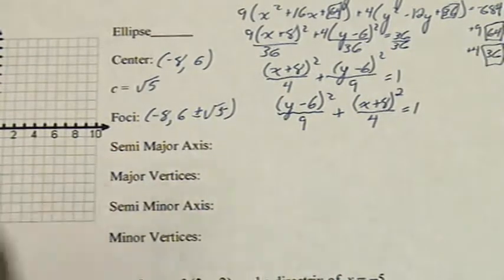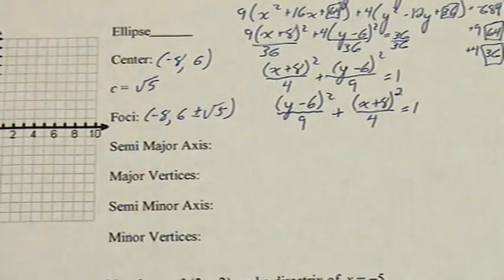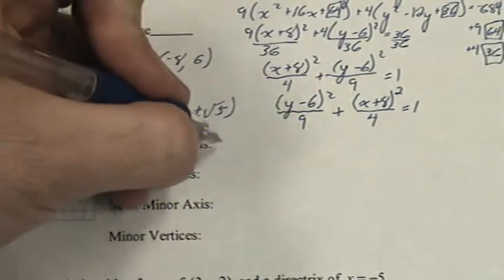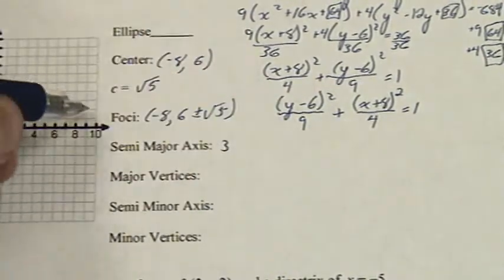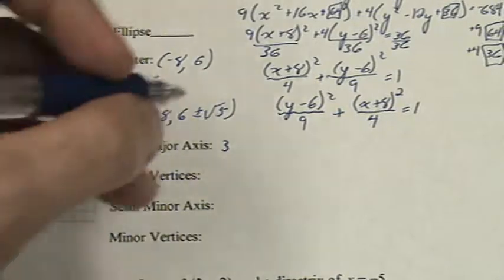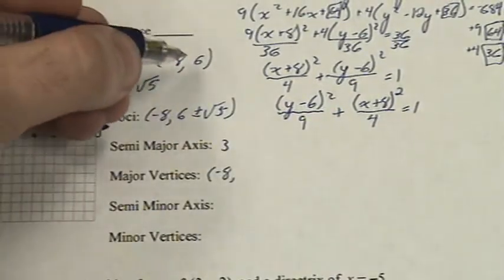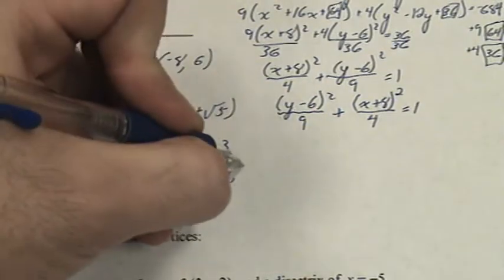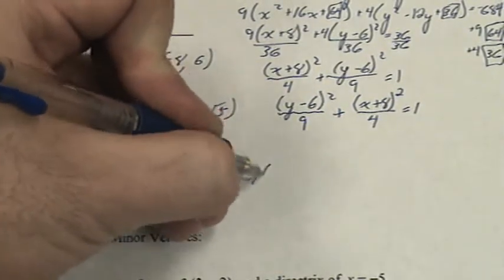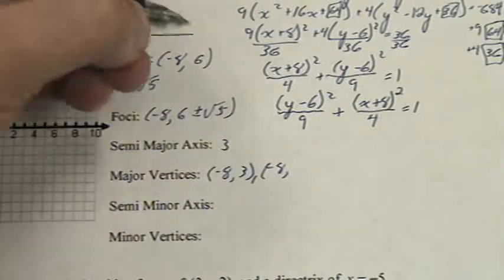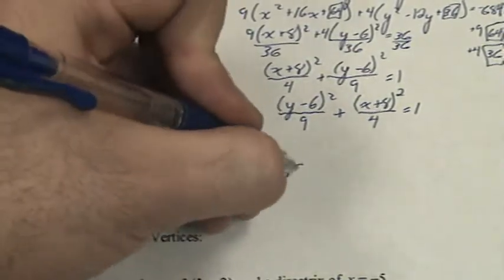The semi-major axis, that's simply a. The square root of 9 is 3. Just like with the foci, we change the y. For the major vertices, we'll change the y. 6 minus 3 is 3. And we have negative 8, comma 6, plus 3, which is 9.